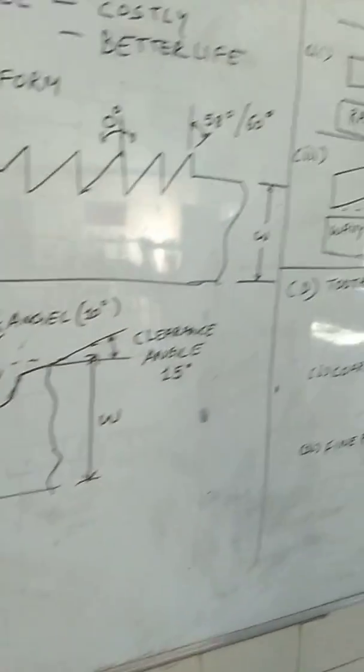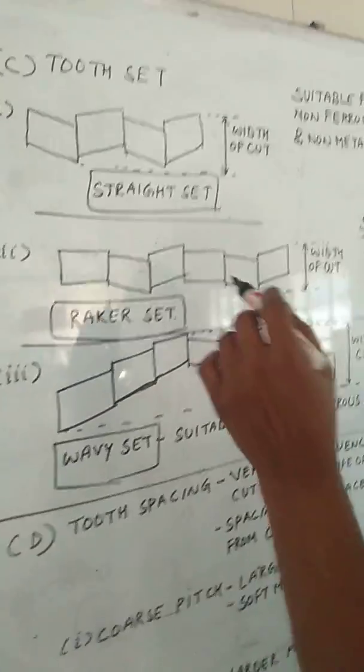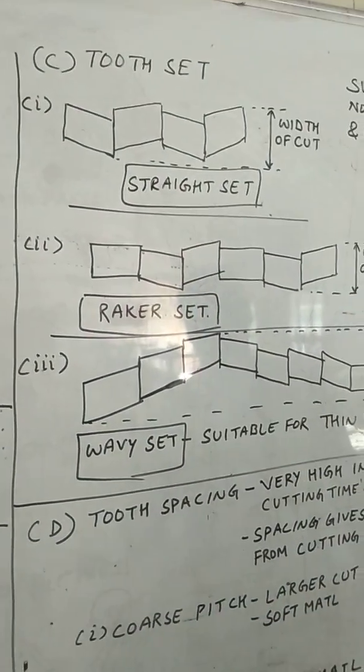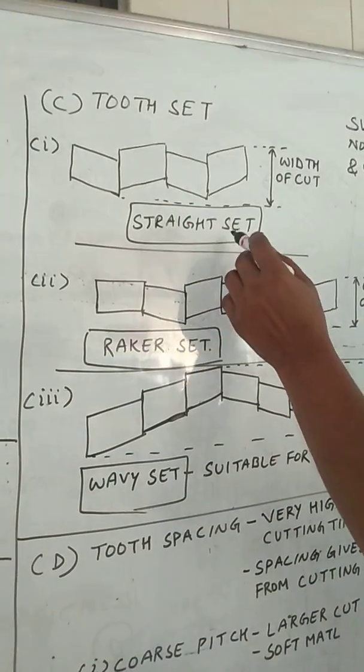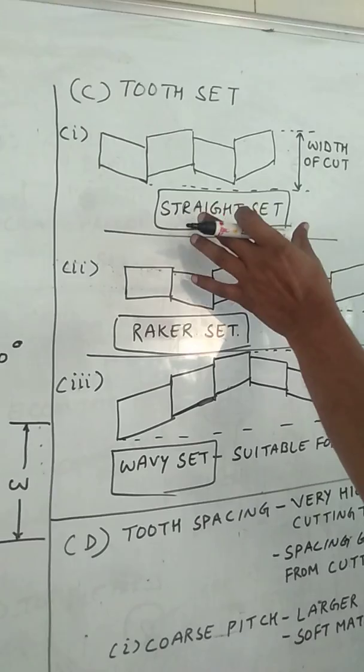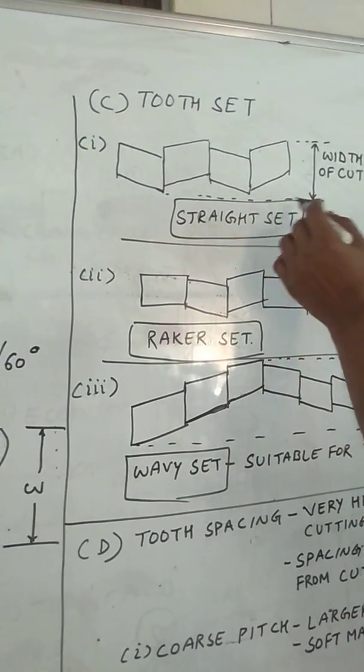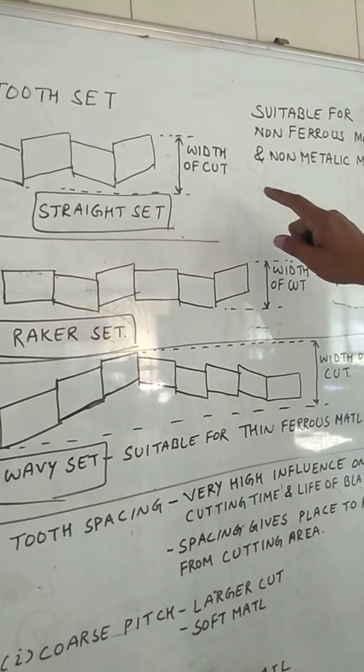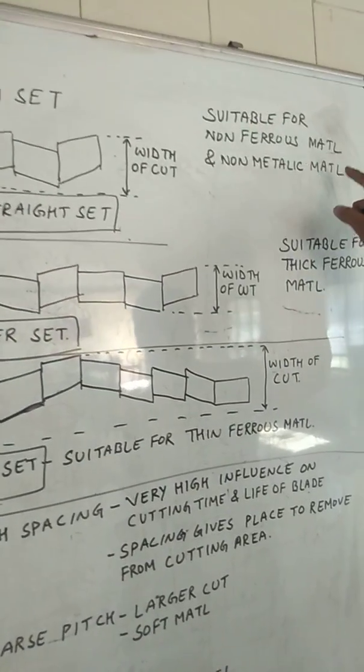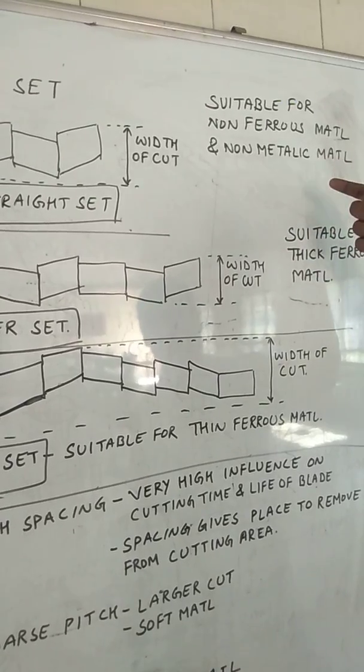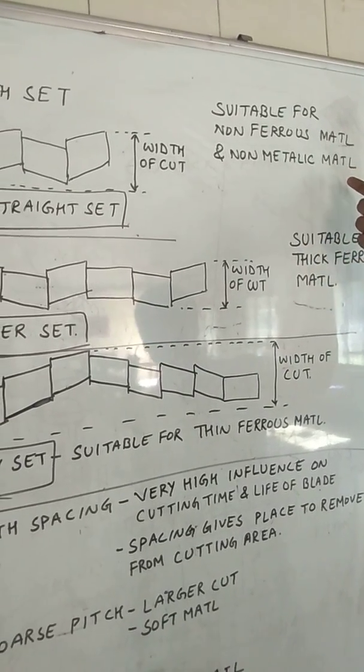The third form of material, that is the tooth set. There are number of teeth in the blade. One category is the straight set. This is the design of that straight set and this is the width of cut. More commonly, this type of set is used for non-ferrous material or non-metallic, say for plastic, rubber, like this, these are the non-metallic materials.